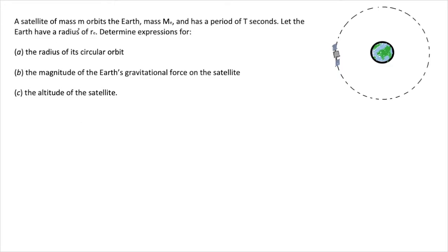A satellite of mass m orbits the Earth, mass mE, and has a period of t seconds. Let the Earth have a radius of rE, and determine expressions for: (a) the radius of its circular orbit, (b) the magnitude of the Earth's gravitational force on the satellite, and (c) the altitude of the satellite.